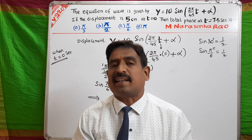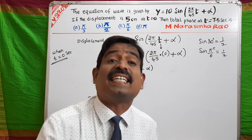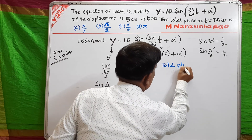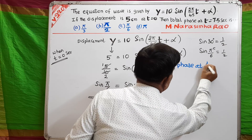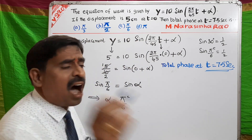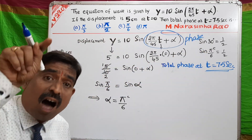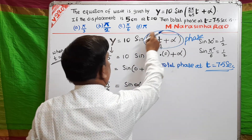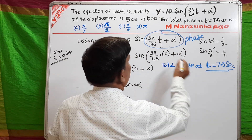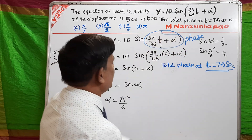Phase gives the position and direction of the particle — it represents the status of the particle. They are asking for the total phase at t = 7.5 seconds. Whatever the argument inside the sine — this total term — we are calling as phase, or total phase.